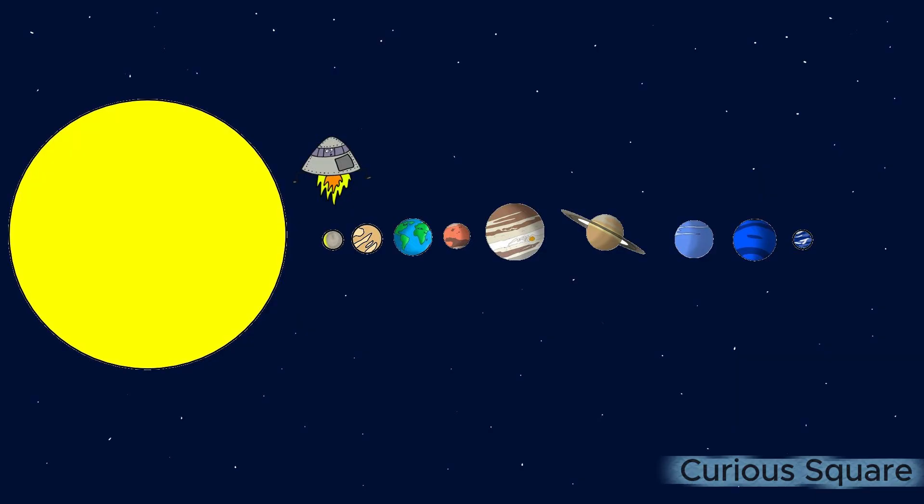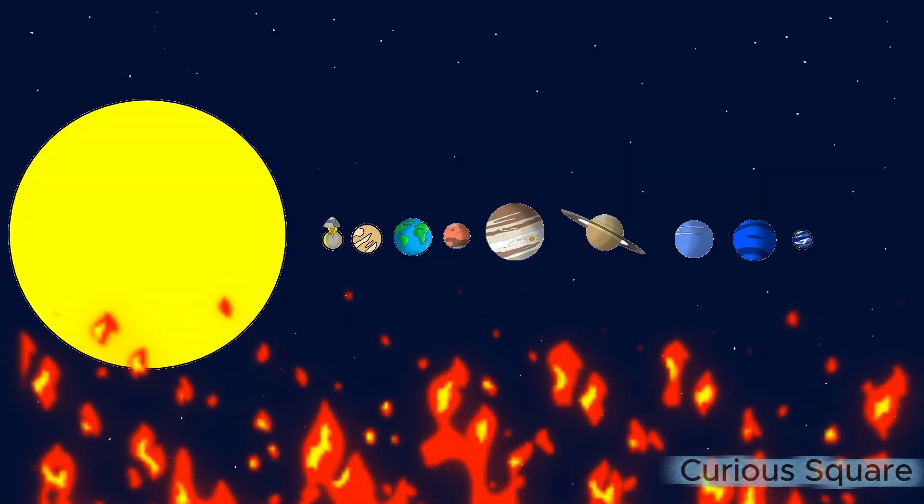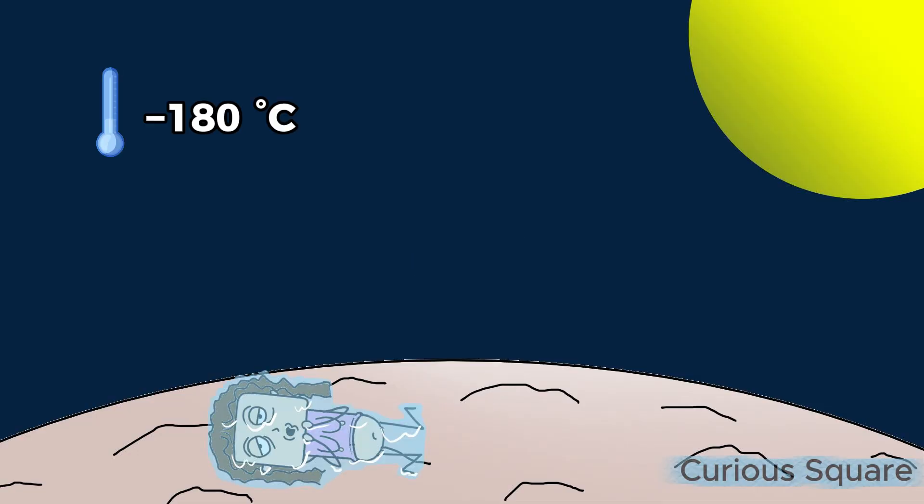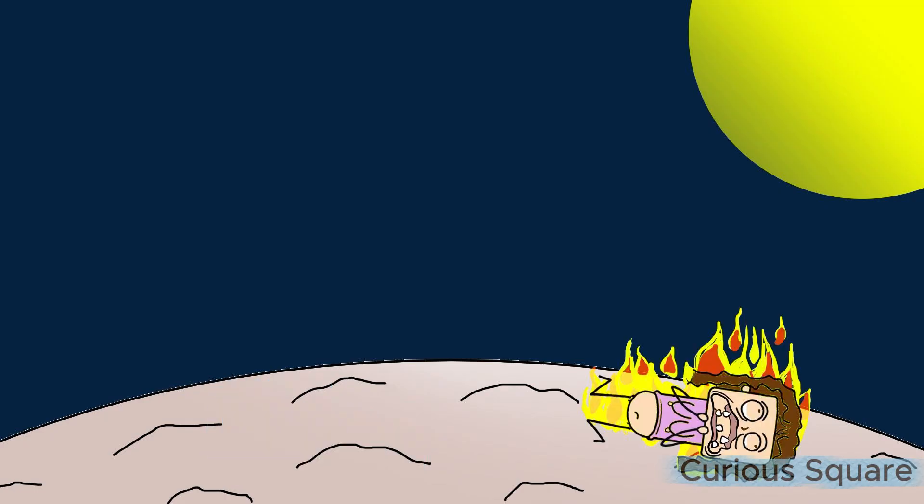Mercury is the closest planet to the sun, but if you think that means constant heat, you're mistaken. During the night, temperatures plummet to a frigid minus 180 degrees Celsius. During the day, however, they can soar up to 430 degrees Celsius.